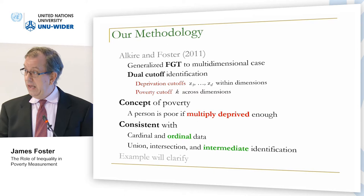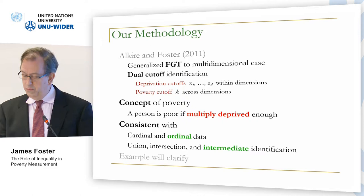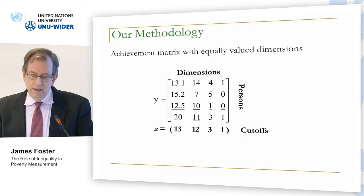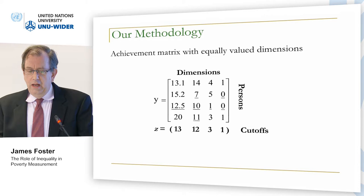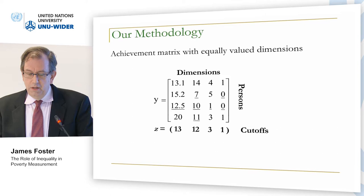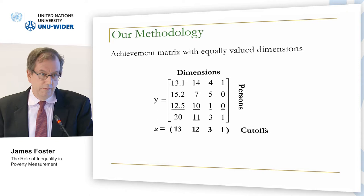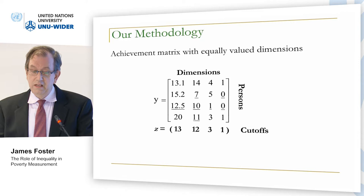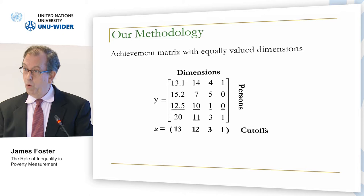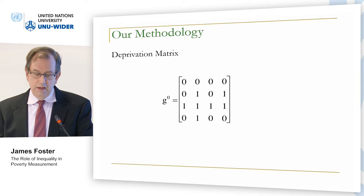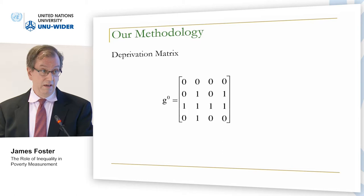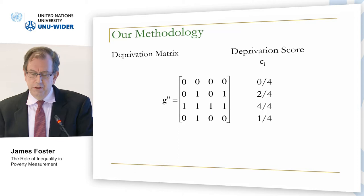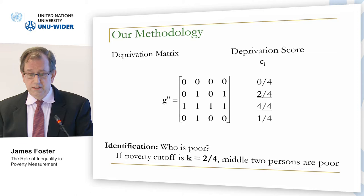An example will clarify. Imagine four dimensions, equally weighted at one-fourth each, across four people. I've underlined all deprivations where the cutoff is above the achievement for that person in that dimension. We convert the achievement matrix to a deprivation matrix: one when deprived, zero when not. Take this deprivation matrix and see what share of dimensions each person is deprived in. First person: zero out of four. Second: two out of four. Third: four out of four. Fourth: one out of four.